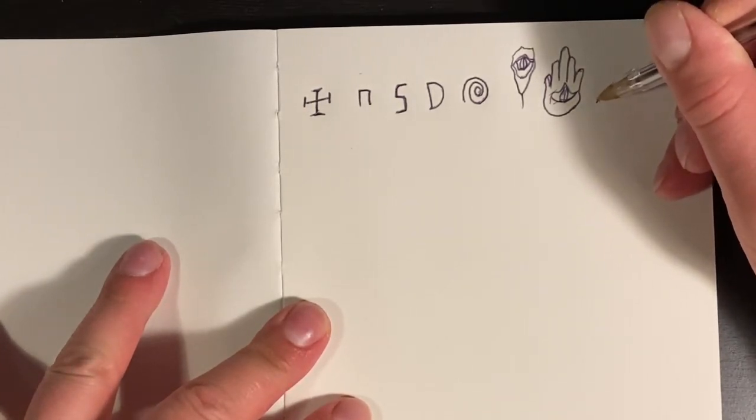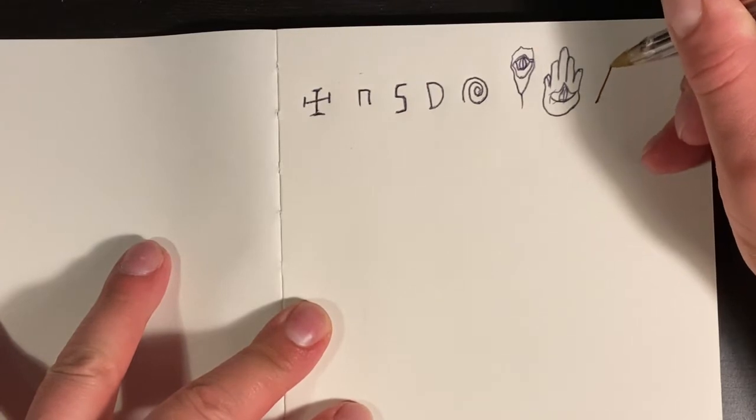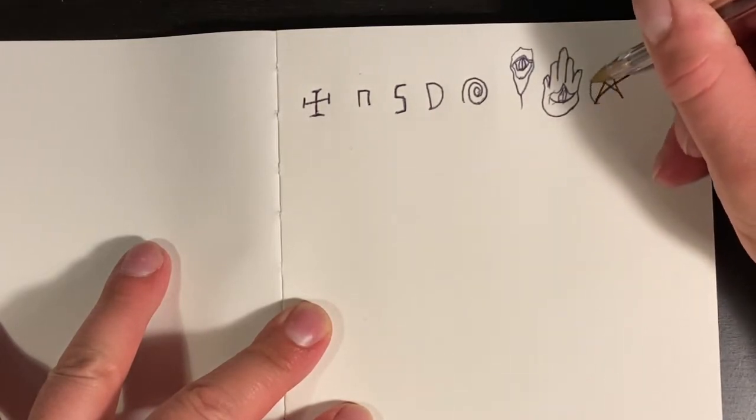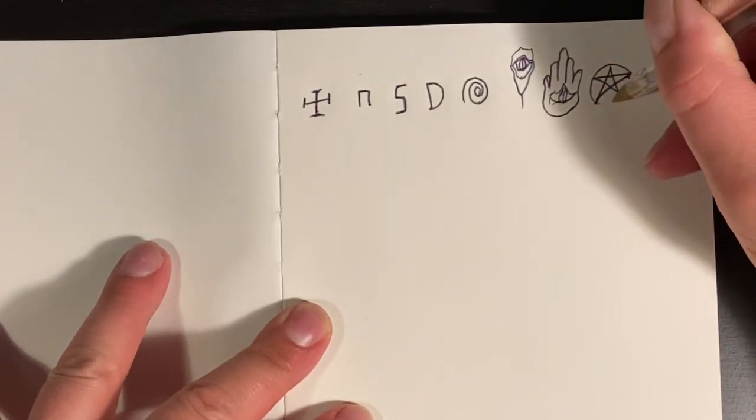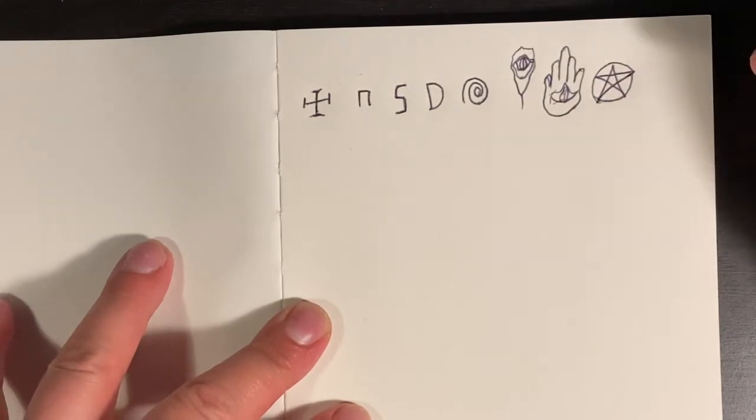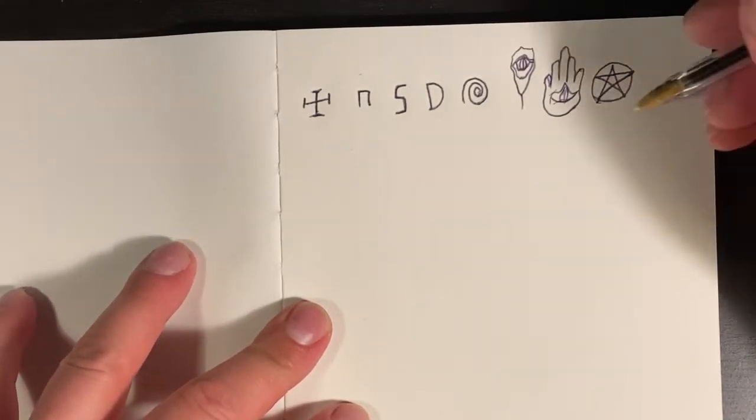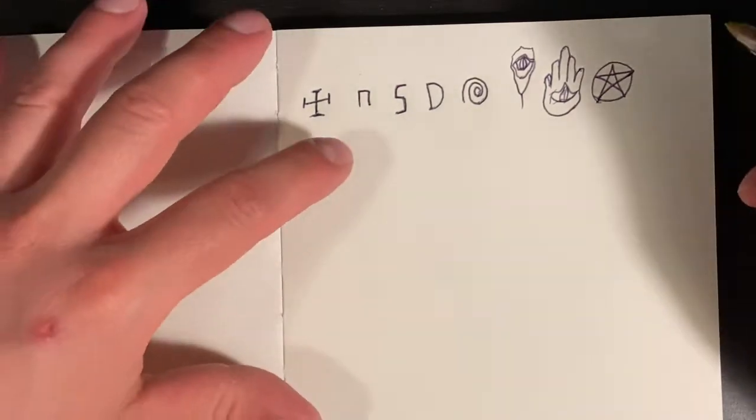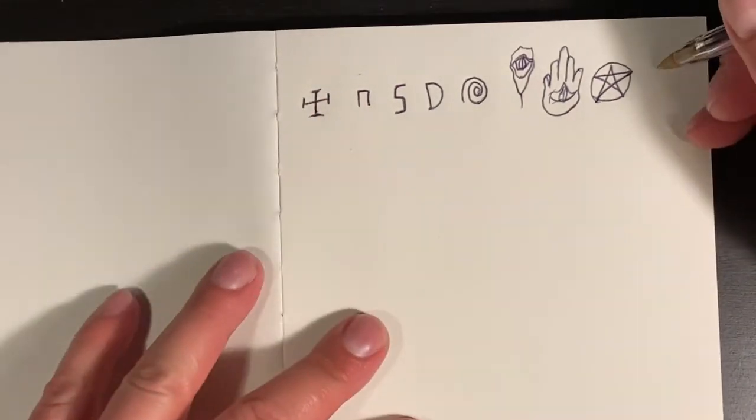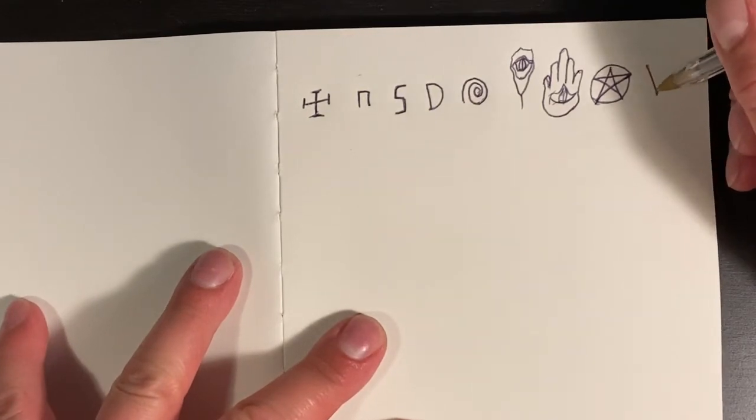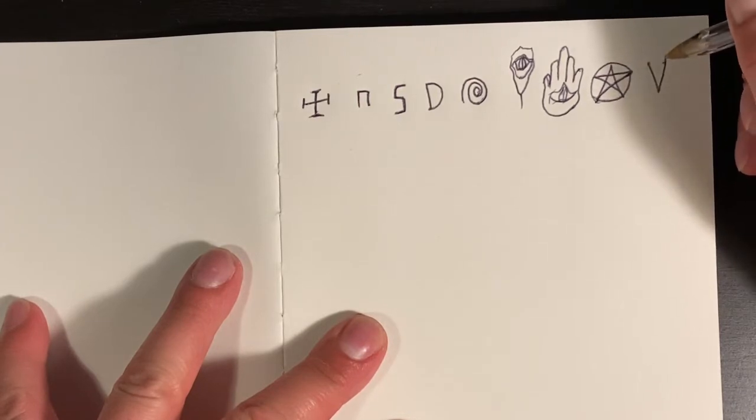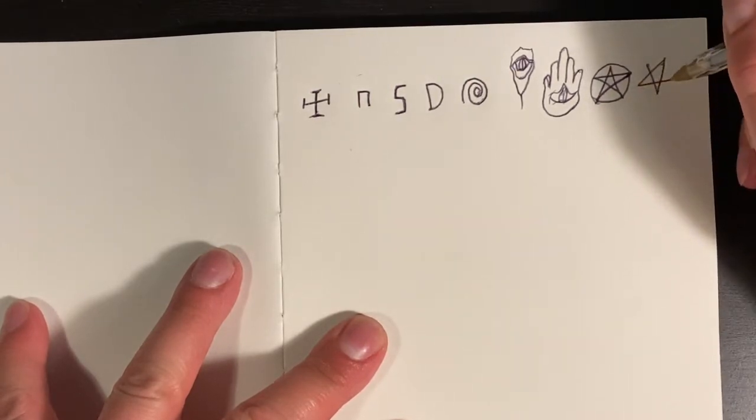There's a number of different variations of stars that we can do for even defense and strength. The Wiccan Pentacle. And of course we can also do the upside down, which I'm really bad about drawing.